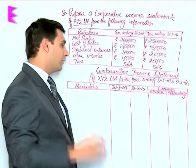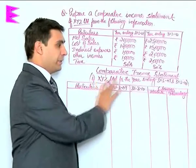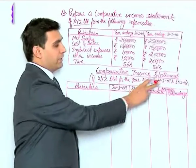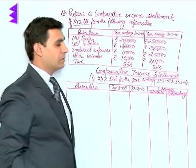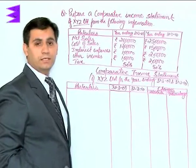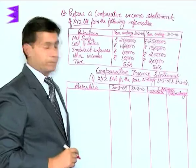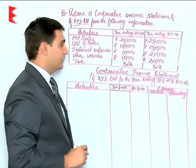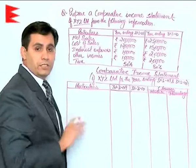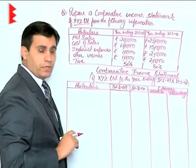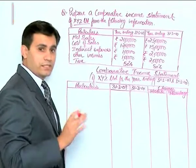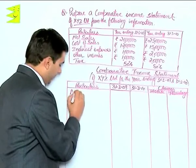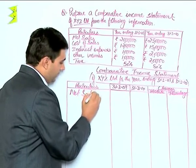The format will go like this: comparative income statement of XYZ Ltd for the year ending 31st March 2009 and 31st March 2010. Coming to the particulars column first — we are given net sales. No gross sales are mentioned here and there are no sales returns, so we will start from net sales only.